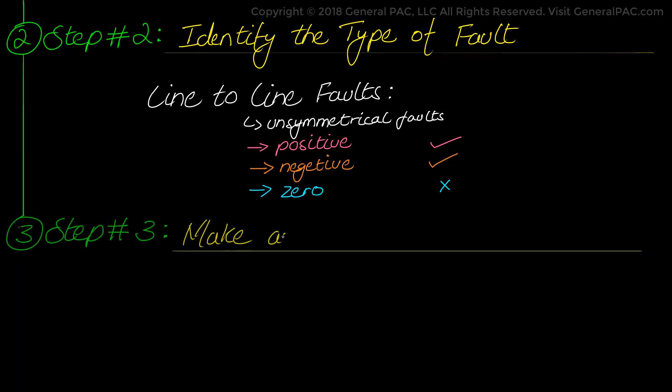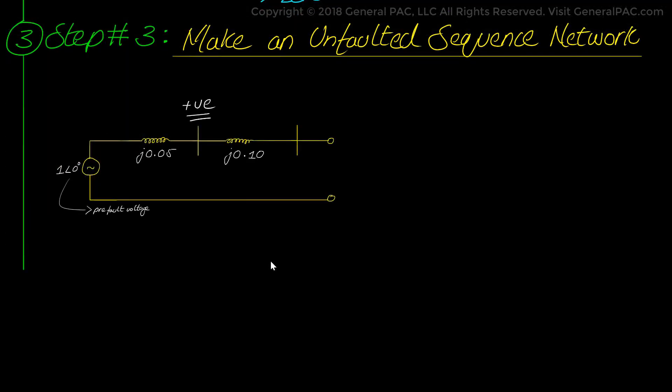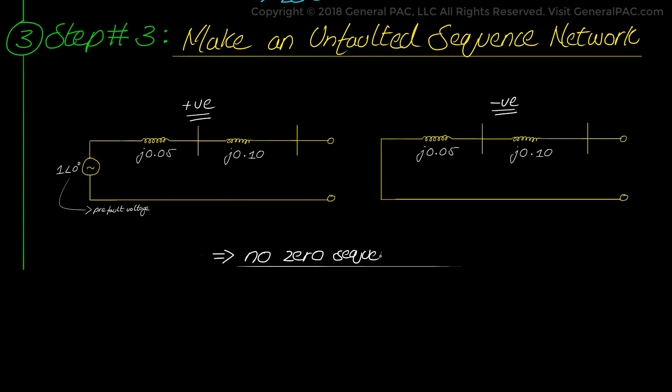Next, we move to step number 3 which asks us to make a sequence network from the per unit converted system. So we draw the positive sequence network and we also draw the negative sequence network. Again, we don't have a zero sequence network because we have a line-to-line fault which does not have a ground mode.